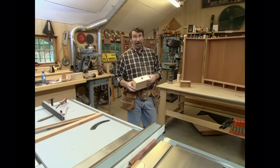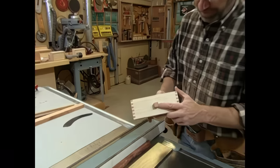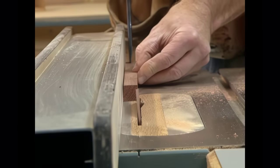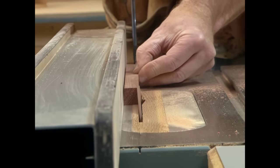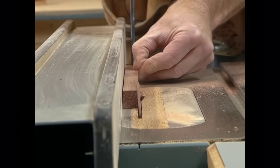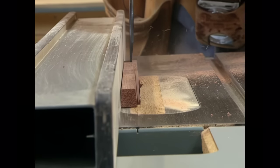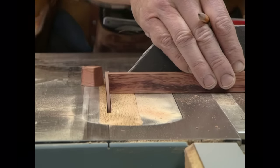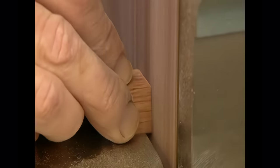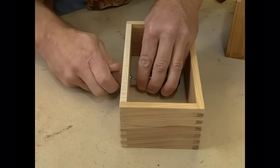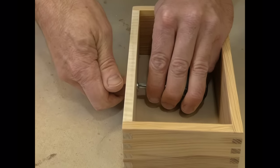Now for the knobs on our drawers, I used some bubinga. I've got a strip here that's about three quarters of an inch square. I've tipped my saw to five degrees, and I'll bevel each edge. And a screw secures it.